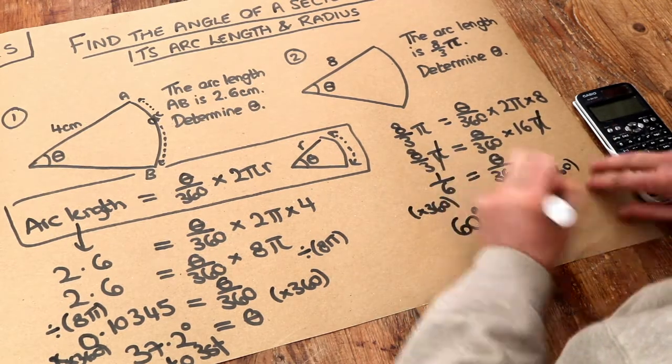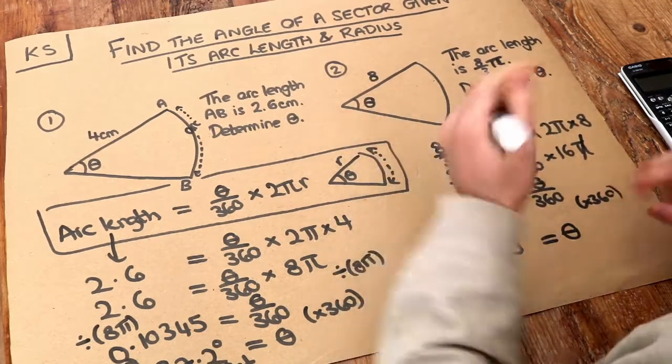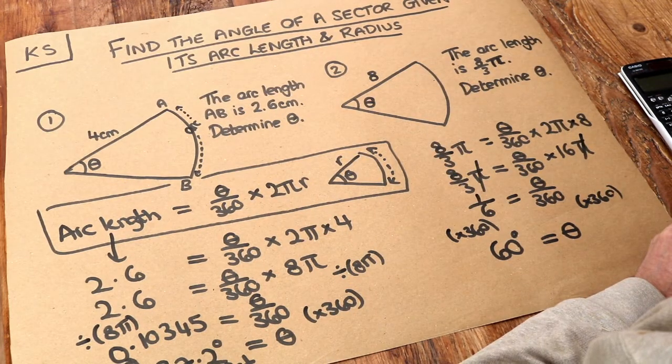So a sixth times 360 is just going to be 60 degrees. So the answer is exactly 60 degrees there. And again, that looks sensible. Thank you.